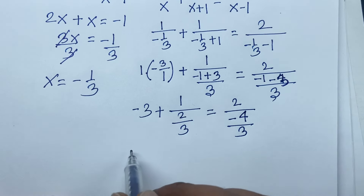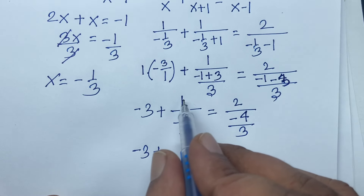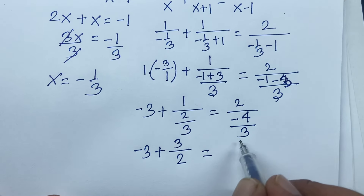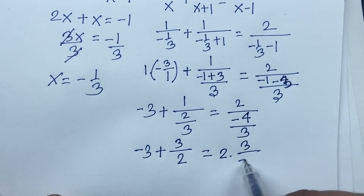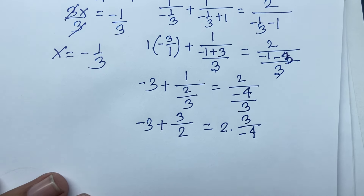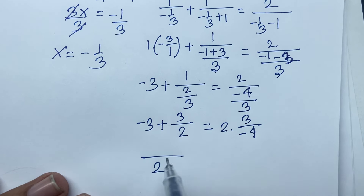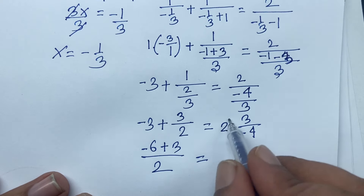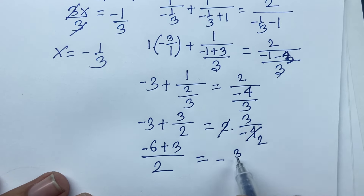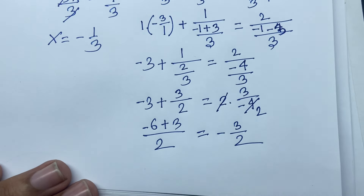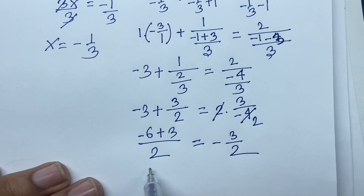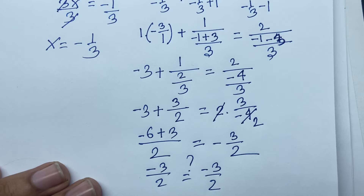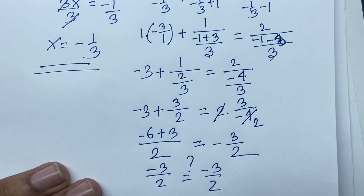So the right side is 2 over minus 4 over 3, which equals 2 times 3 over minus 4, giving 6 over minus 4, or minus 3 over 2. The left side: minus 3 plus 3 over 2 equals minus 6 plus 3 over 2, which is minus 3 over 2. So minus 3 over 2 equals minus 3 over 2. Confirmed — x equals minus 1 over 3 is the correct answer.